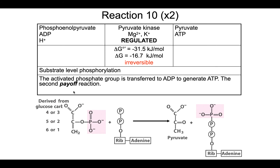Phosphoenolpyruvate is another really high-energy molecule. Its delta G of hydrolysis of that phosphate group is much more negative than that of ATP, so it can be used to transfer the phosphate group to ADP to make ATP. We're taking phosphoenolpyruvate and converting it to pyruvate and generating ATP — that's two ATP since all reactions occur twice. This is our third of three irreversible reactions, catalyzed by pyruvate kinase. Kinases are used in both directions in glycolysis: in one direction to phosphorylate something using ATP, and in the other direction phosphorylating ADP to make ATP. This is our final example of substrate-level phosphorylation.